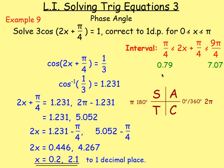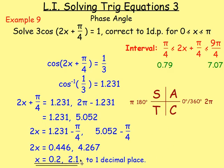A very similar example had cos(2x + π/4) in radians. Again you change the interval: double it and add π/4 to each bound. When working in radians it can help to convert the boundaries to decimals — π/4 is about 0.79, and 9π/4 is about 7.07 — so you can check your answers don't exceed the interval. You get both answers correct to one decimal place. Remember, there's no degrees sign: the answers are in radians.